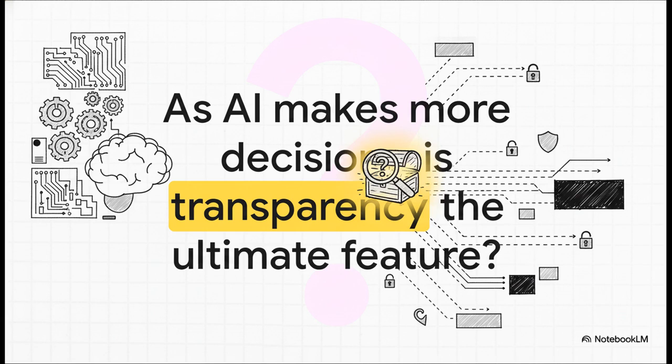Is it speed? Is it power? Or is it something much more basic? As AI makes more decisions for us, is transparency the ultimate feature? Maybe it has to be.